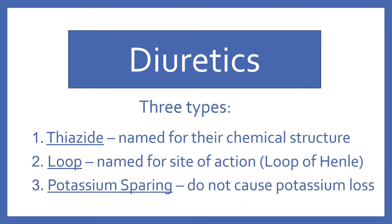There are three types of diuretics. Thiazide diuretics, which are named for their chemical structure. Loop diuretics, which are named for their site of action at the loop of Henle in the kidney. And potassium-sparing diuretics, which do not cause potassium loss.